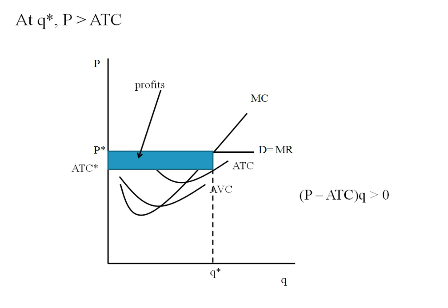Another way of expressing profit is P minus ATC times Q. And if that's greater than zero, we are earning a positive profit.